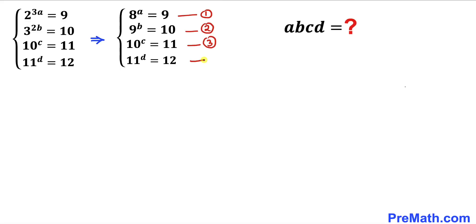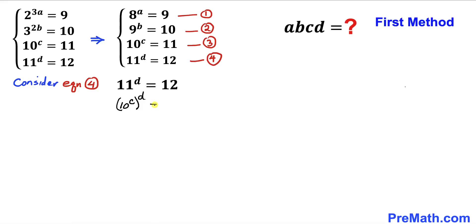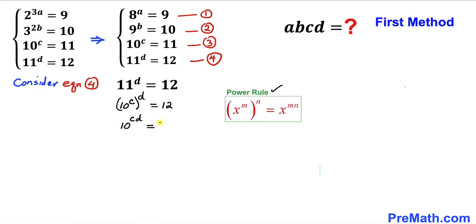Now let's look at Method 1. Starting with equation 4: 11^d = 12. We know 11 = 10^c, so we replace 11 with 10^c, giving (10^c)^d = 12. Applying the power rule, this becomes 10^(cd) = 12. Now we know 10 = 9^b, so we replace 10 with 9^b, giving (9^b)^(cd) = 12, which becomes 9^(bcd) = 12.